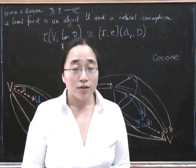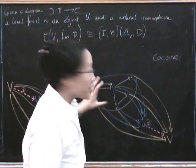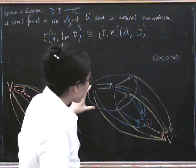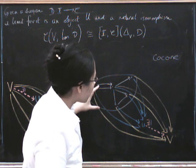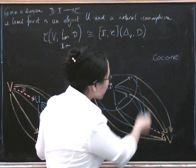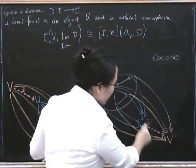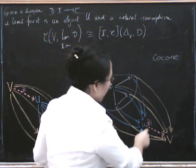So let's just run over the cone definition of co-limits again. Given this white diagram here, a co-limit for it is a cone under it, such that, given any other cone under it, there exists a unique factorization.